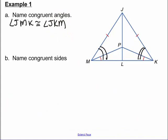Now naming our congruent sides. Down here, angle PMK is congruent to angle PKM. So that's going to give me sides congruent of PM congruent to PK.